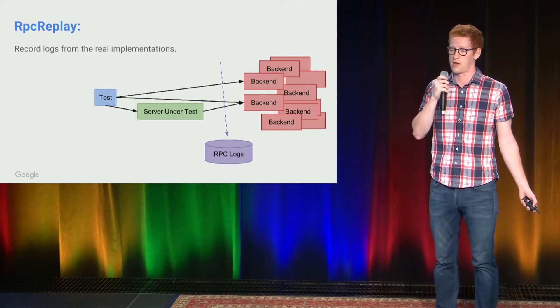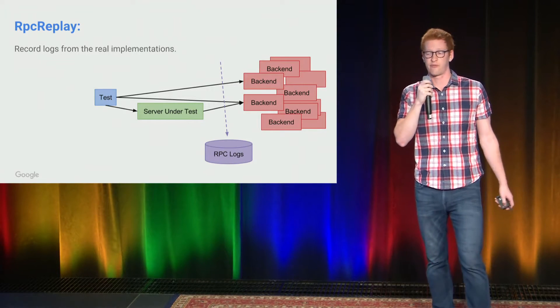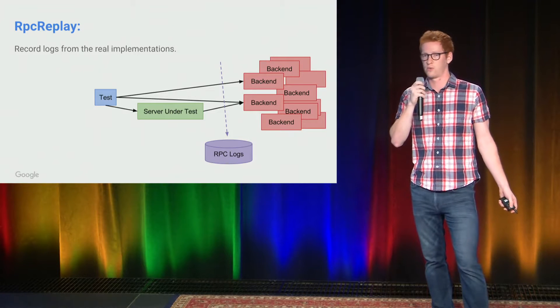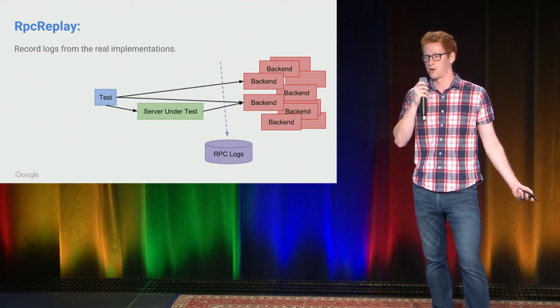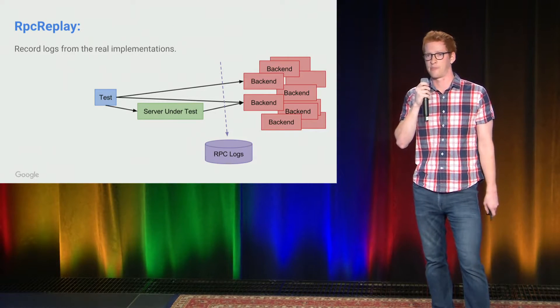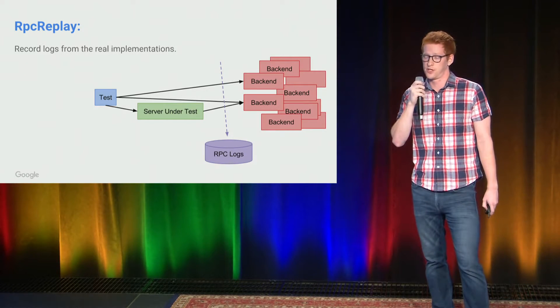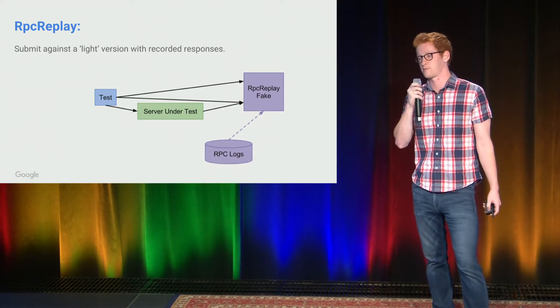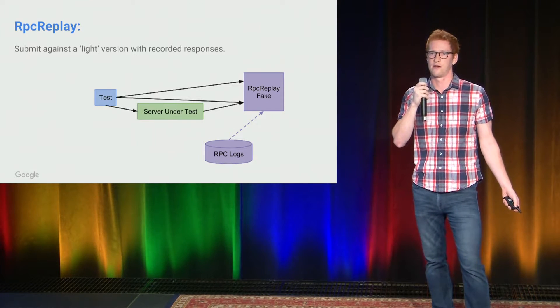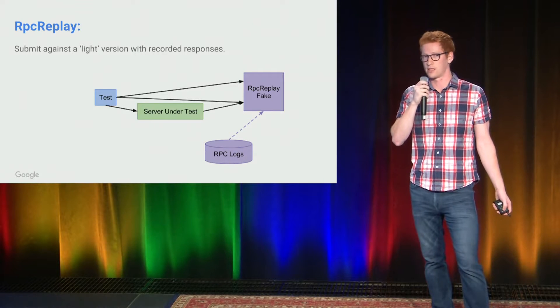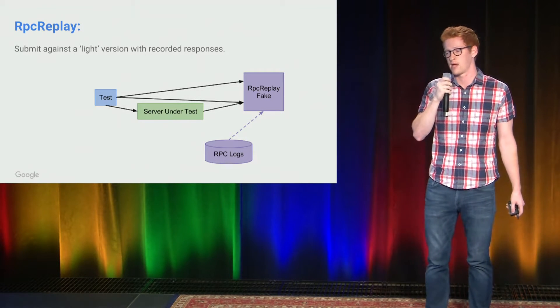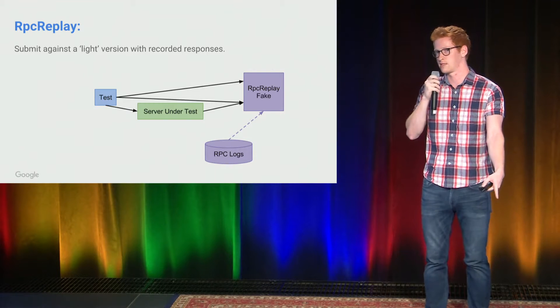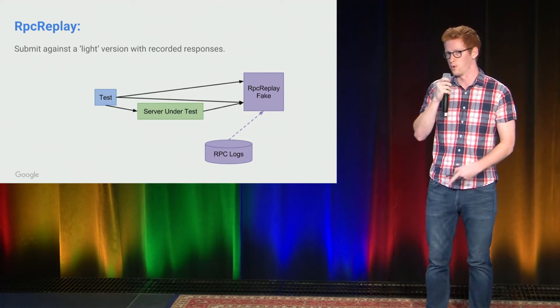The first mode looks exactly like what we saw earlier. We have the test, we have our system under test, we have a bunch of backends. And when we run the test in this mode, we just write down all the RPC interactions that happened with the backends. What this lets us do is run a lighter version of the test — instead of starting up those expensive backends, we're going to start a very dumb server.